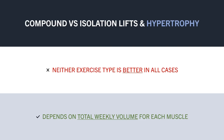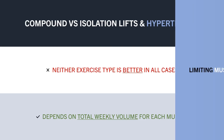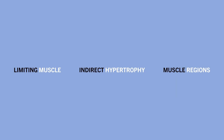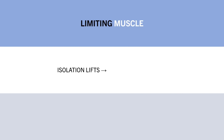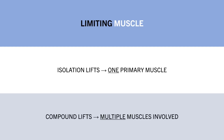To decide which exercises to implement into a training program, there are a few additional considerations to make. The first and most important consideration is what muscle is the limiting factor of the exercise. For isolation lifts, there is usually only one primary muscle involved, so that muscle is maximally stressed. With compound lifts, there are multiple muscle groups involved, but usually only one muscle limits performance and is maximally stressed.